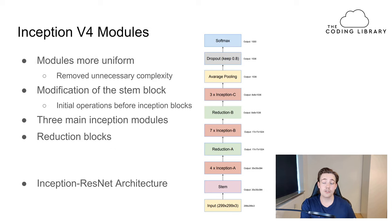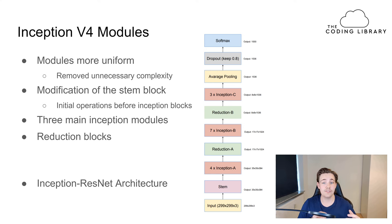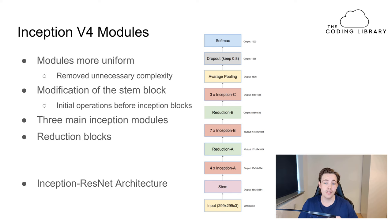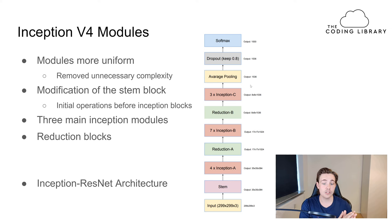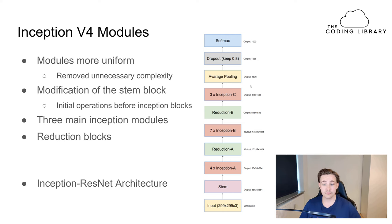The last topic in this video is a brief introduction to Inception version 4, which will be covered in more depth in another video. Version 4 introduces different inception block types: A, B, and C modules, each performing individual and different operations that are stacked on top of each other. The architecture also includes a stem block — initial operations like batch normalization and convolutional layers — before passing data through the inception blocks.